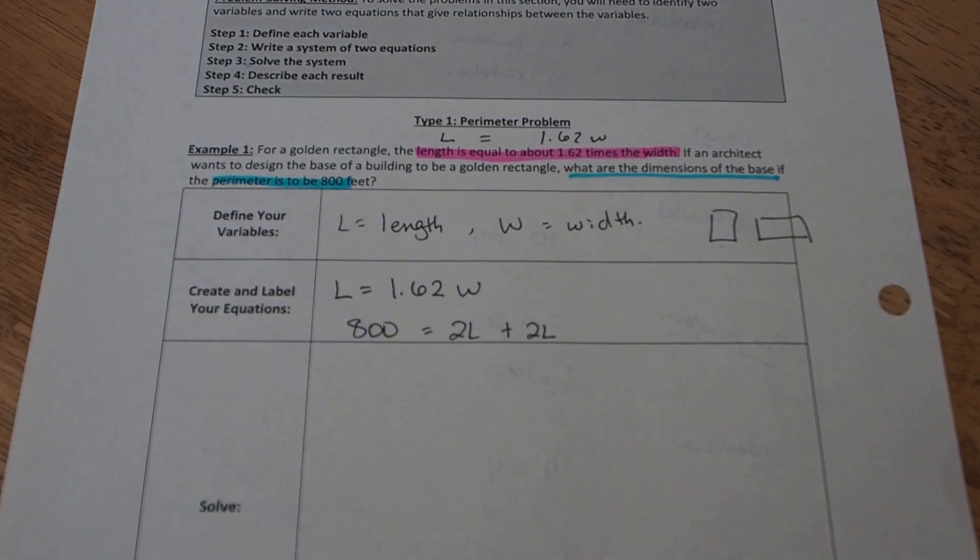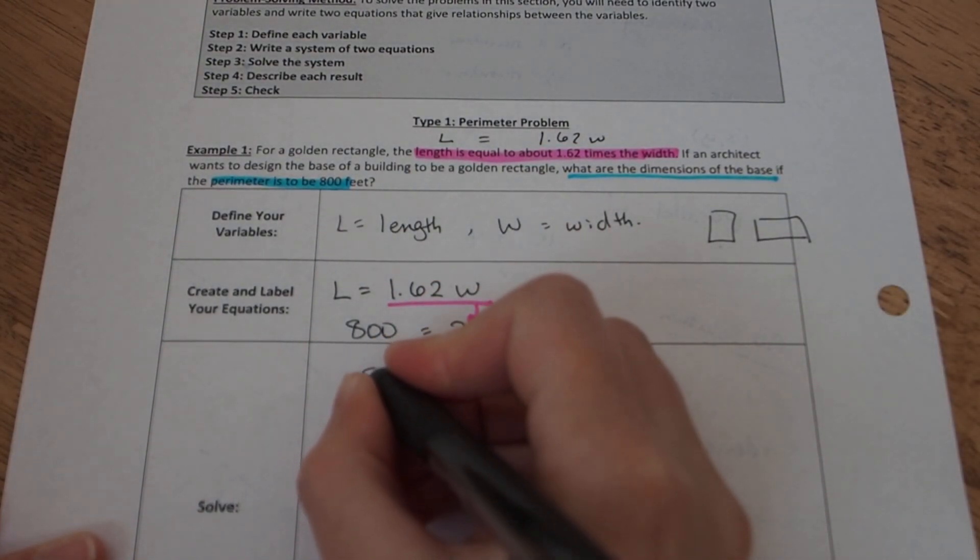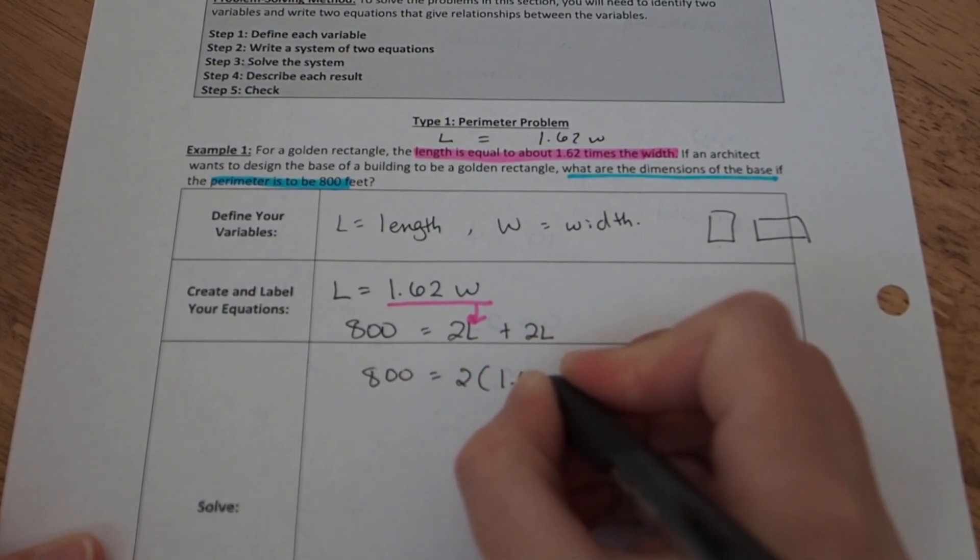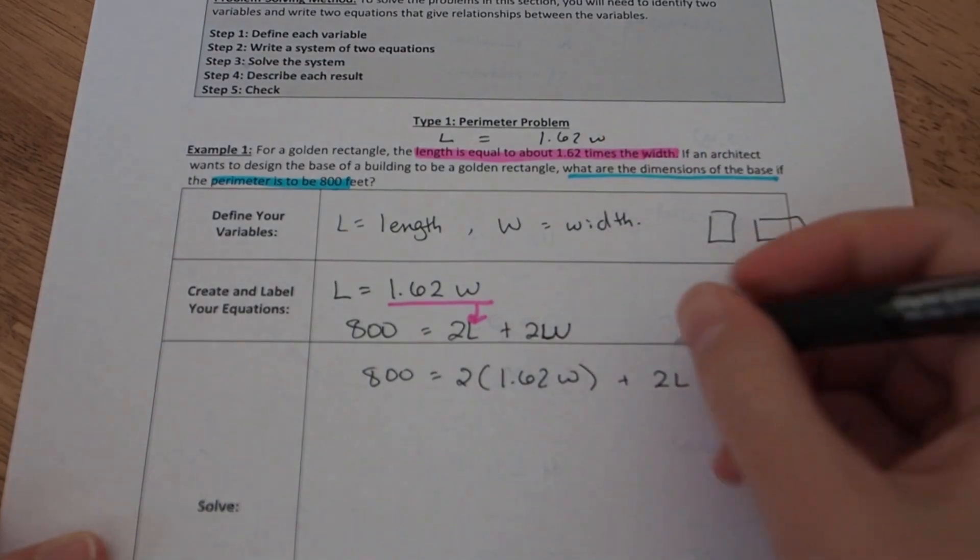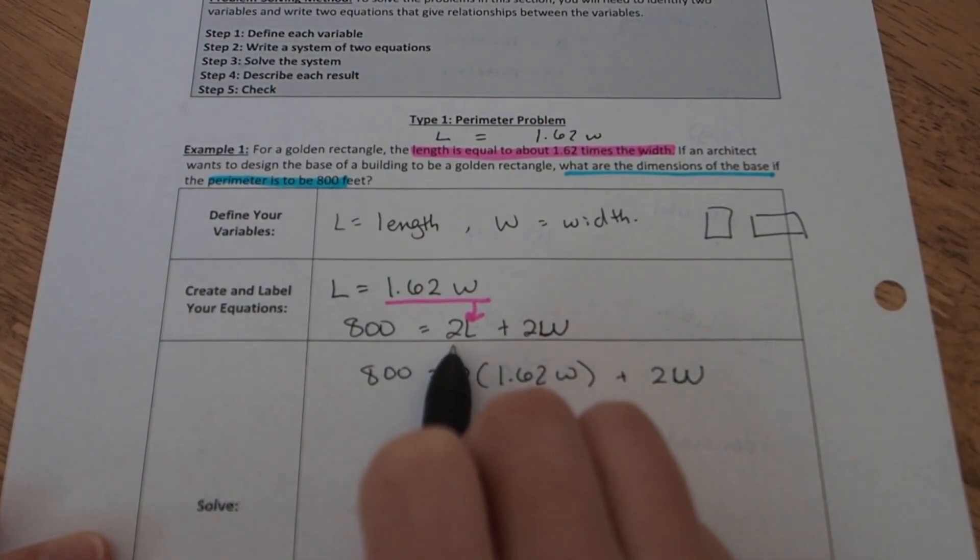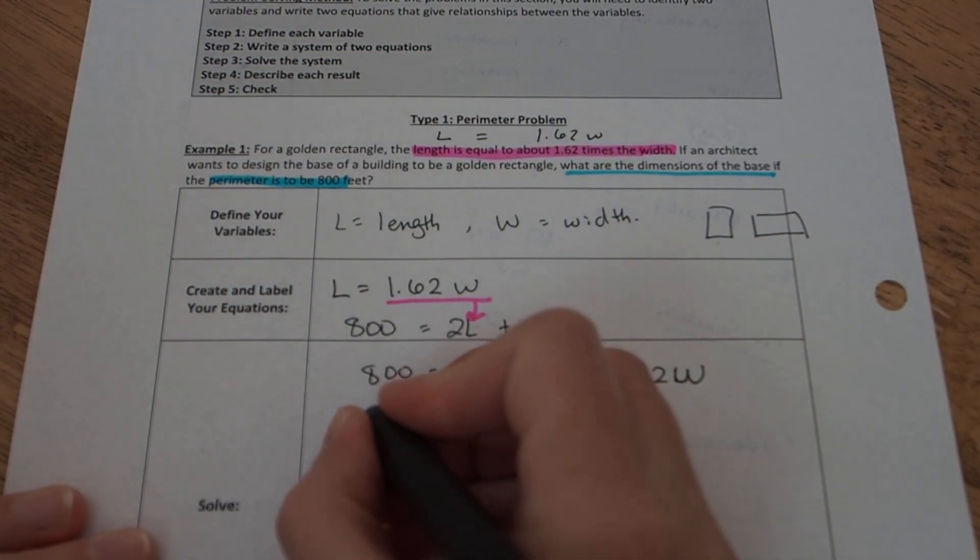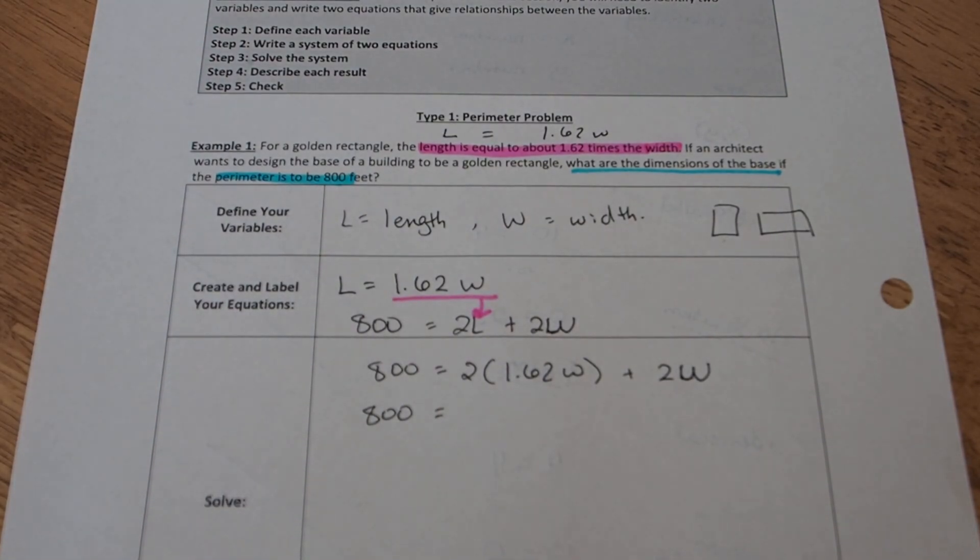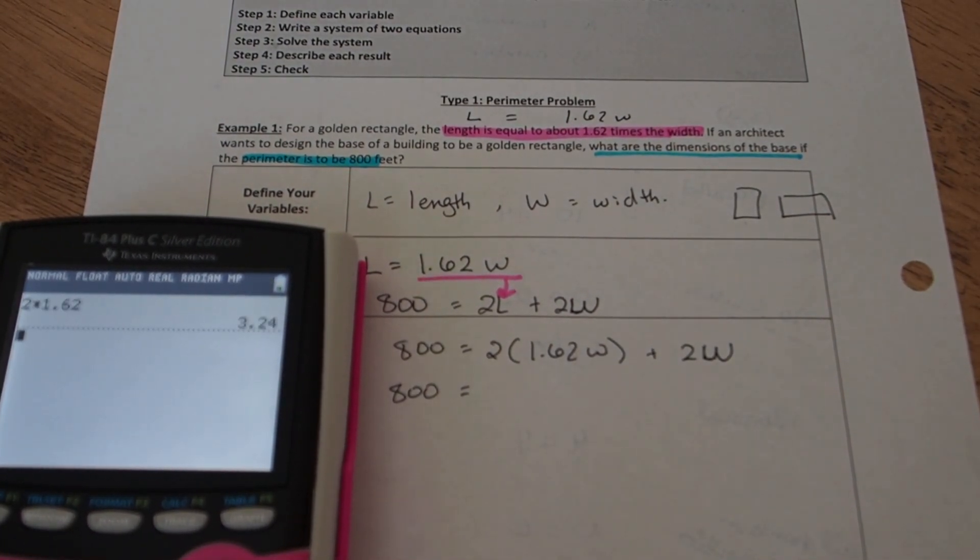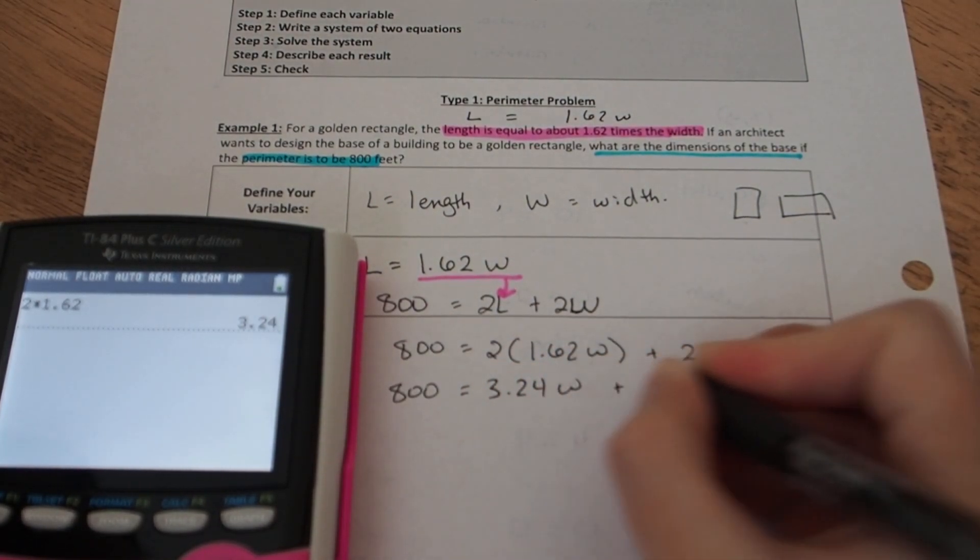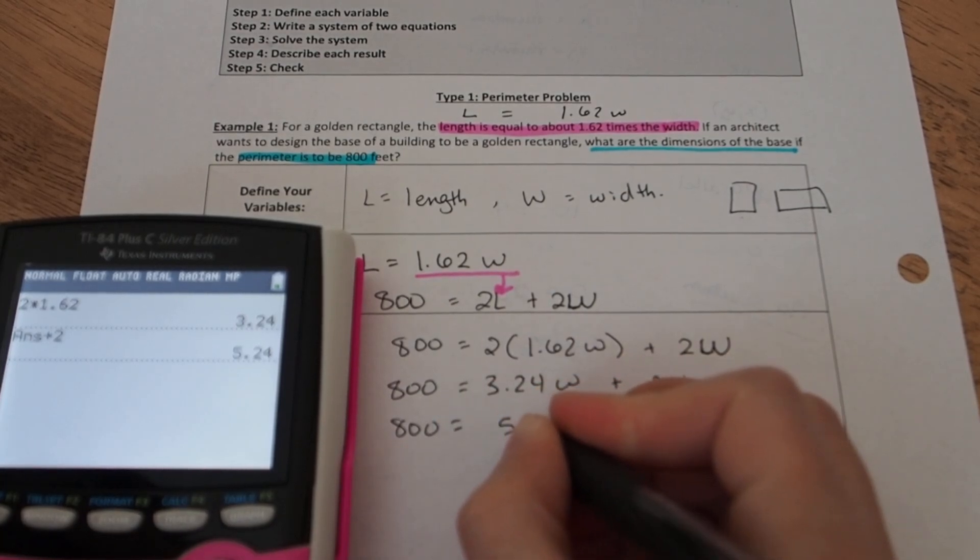Now I get to choose between substitution or elimination, but since I have L already solved for, this is going to be perfect for substitution. So I'm going to have 800 equals two times the expression 1.62W in place of L plus two W. And now we distribute or multiply this two times the 1.62. So with my calculator, let's find out two times 1.62 is 3.24W plus the two W from the end here. And if I add those up, I should have 800 equals 5.24W.